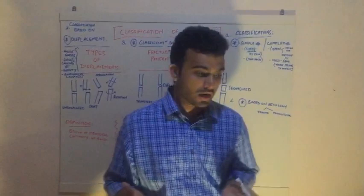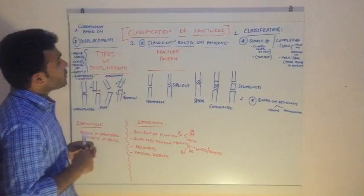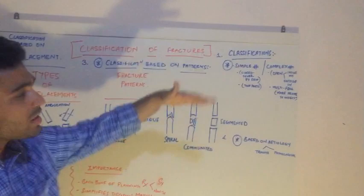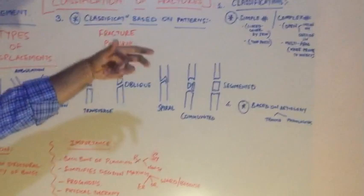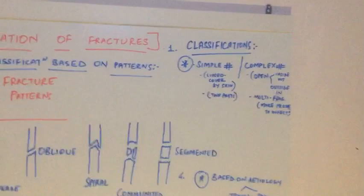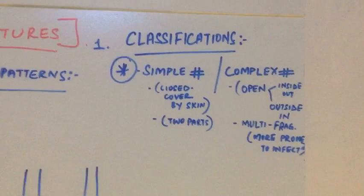We begin with our classification of fractures. There are different types of classifying fractures. The basic types - you can simply say that a fracture is a simple fracture or a complex fracture. A simple fracture is one which is closed, there's a good soft tissue cover, the skin is intact, and generally speaking the fracture has just two parts.